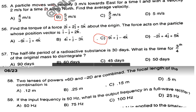Question number 57. The half-life period of a radioactive substance is 30 days. What is the time for 3/4 of the original mass to disintegrate? Answer is Option B: 60 days. Question number 58. Two lenses of power +6D and −2D are combined. The focal length of the combination is Option B: 0.25 meter.